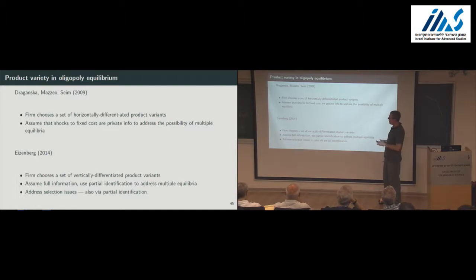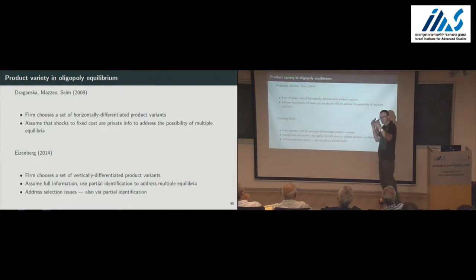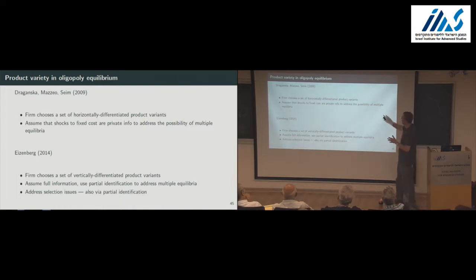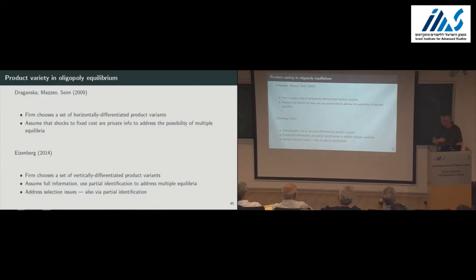The two applications I thought of covering — and I'll only cover the first one — are Gansk, Amazio, and Syme. Both of these papers have firms choosing a product portfolio among a set of feasible products and prices in a two-stage game. First stage, you commit to your product choices. Second stage, you commit to your pricing. There are some methodological differences. I will cover this paper because it is specifically about mergers. In terms of methodology, I think these papers offer somewhat complementary strategies for dealing with the econometric or methodological challenges that we have discussed.